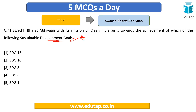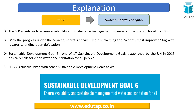The answer is option four — SDG 6. SDG 6 relates to ensuring the availability and sustainable management of water and sanitation for all by 2030. The SDGs were launched by the United Nations in 2015 with a target of 2030 — 15-year goals. With progress under Swachh Bharat Abhiyan, India is also claiming the 'world's most improved' tag regarding ending open defecation, driven significantly by toilet construction.